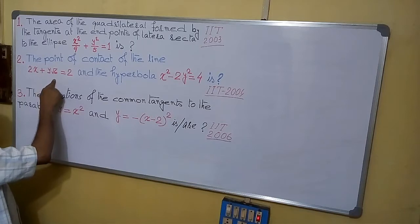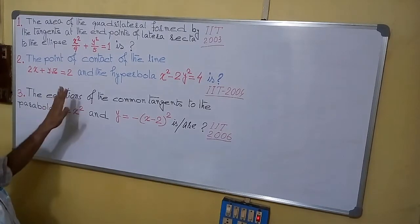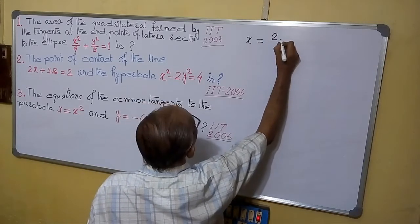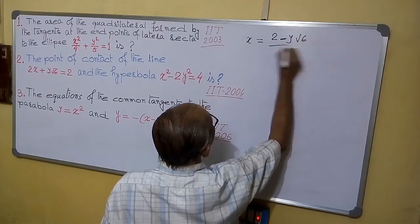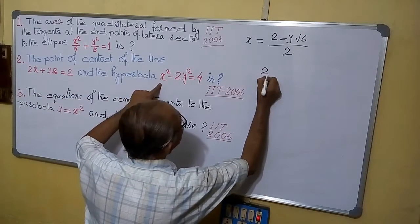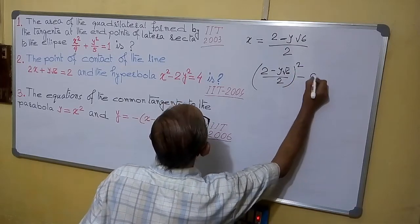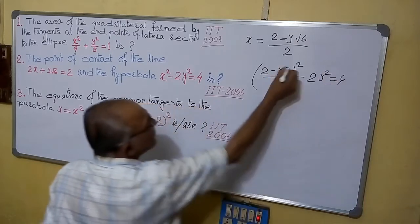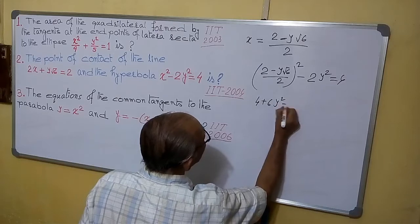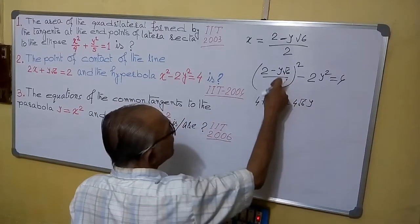The point of contact of the line and the hyperbola — you have to find the point of contact. To find the point of contact, it is very simple. From the line equation, find x: x equals 2 minus y√6 / 2. Put this value of x into the hyperbola equation.